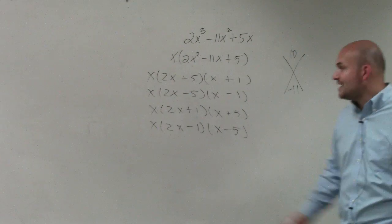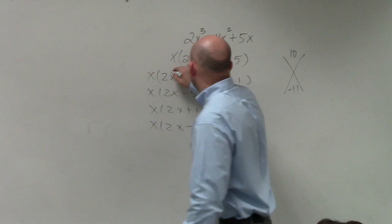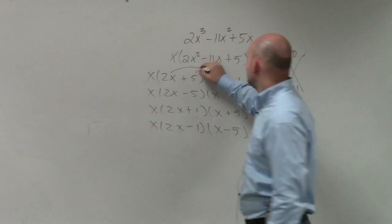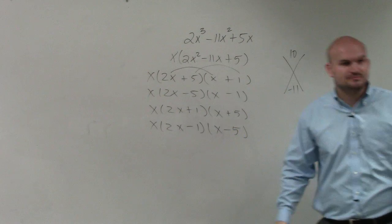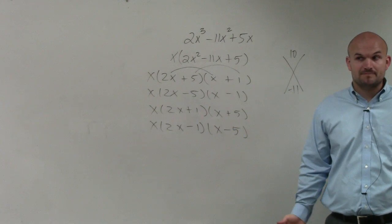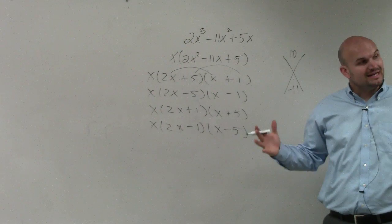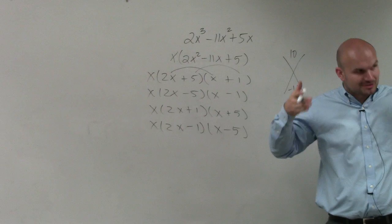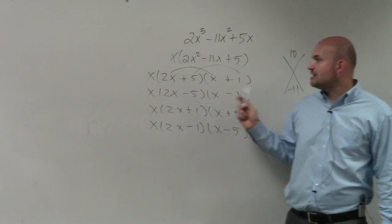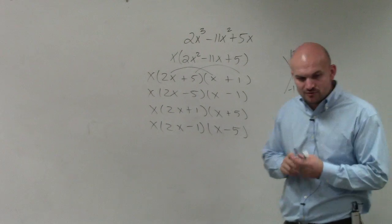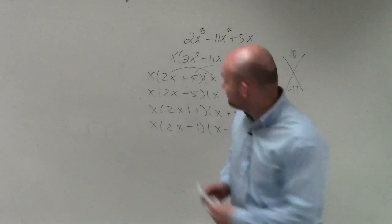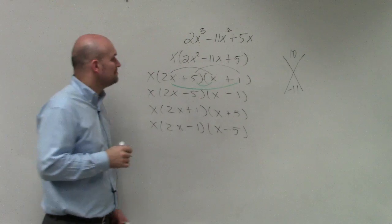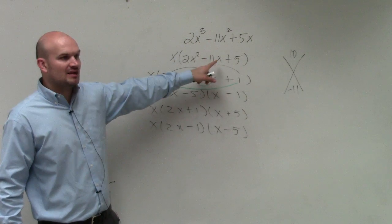These are the only possibilities that multiply. Because for every single one, 2x times x gives you 2x squared, and 5 times 1 gives you 5. All of those are all the same. So what we need to do, you can work this out by applying FOIL, or you can start doing the mental math in your head.